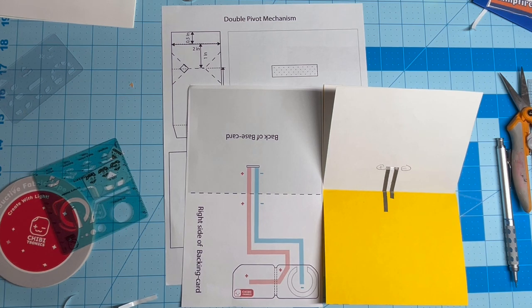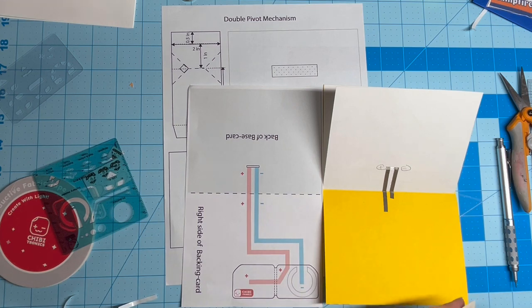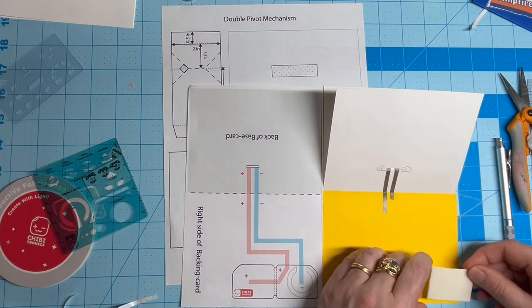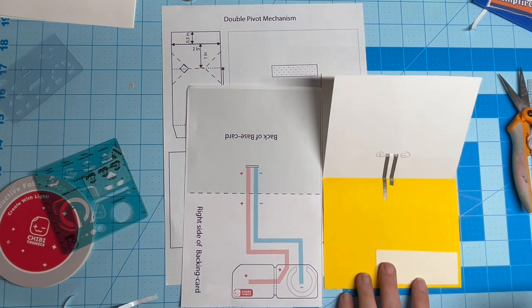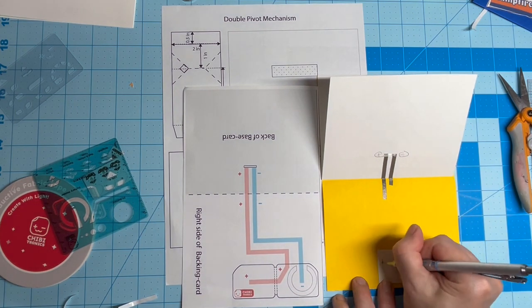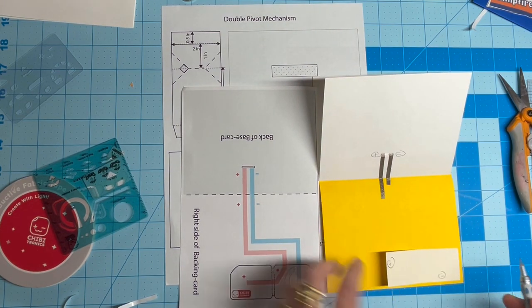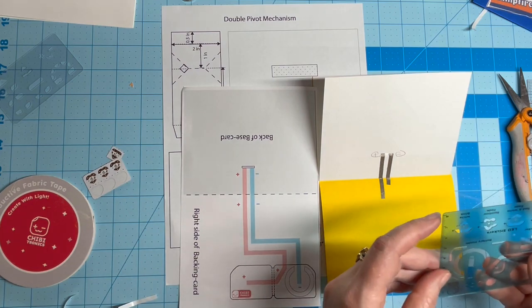Fold the scrap in half and adhere it to the right corner. Use the circuit diagram as a guide to sketch out the positive and negative traces. A stencil is helpful if you have one, but not necessary.